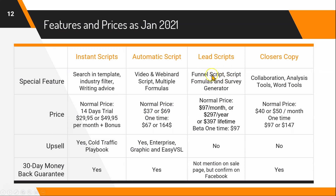Lead Script's highlights are the funnel script and survey generator, though as noted in the detailed review, there are some minor concerns about implementation. Copy Closer's interesting features include collaboration and analysis tools, but be aware that both parties need a paying account to collaborate on the same piece of copy. On pricing, Instant Script differs from the others — all others currently offer one-time deals, while Instant Script only has a monthly package with a 14-day trial.